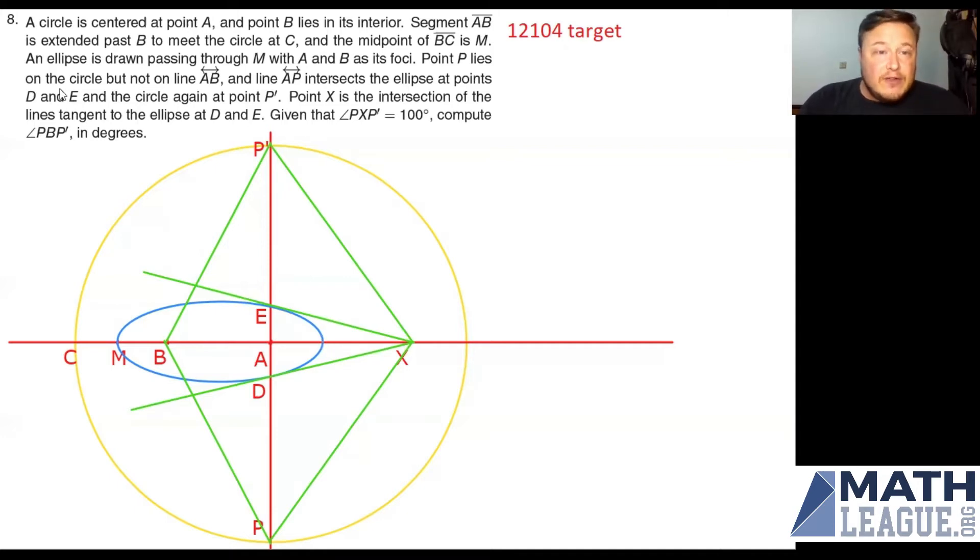Now it says point P lies on the circle but not on AB. Now here's the trick that I use for this problem. I looked at this and I said, hey, this is a math contest problem, which means that if they don't tell me where point P has to be, I get to put it anywhere I want. So in other words, if the problem is well written, I can basically put P anywhere I want and assume that the answer is going to be the same no matter where P is.